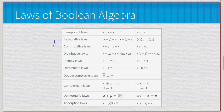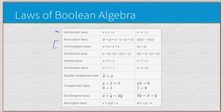Those are more transformative in nature rather than actual simplification. The idempotent law says if you have x plus x, it's just x — anything added to itself is just that value. Same thing with x times x equaling x. So instead of having two variables in an operation, you can remove the duplicate.